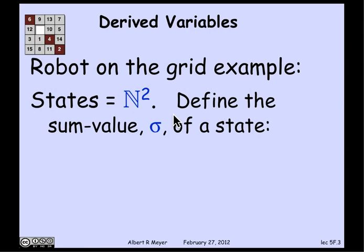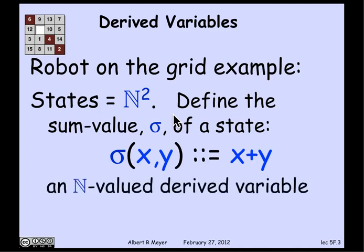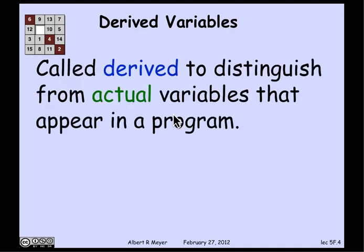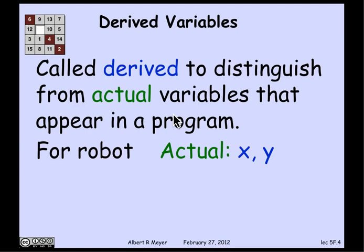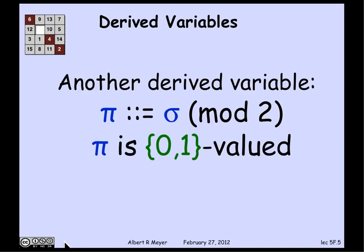In the example of the robot on the grid, the states were pairs of non-negative integers giving the coordinates of where the robot was. One useful derived variable was the sum sigma of a state, defined to be x plus y — a non-negative integer valued derived variable. The word 'derived' comes because we're making it up; it's not part of the specification of the state machine. Another useful derived variable was the parity of sigma — whether the number was even or odd — a 0-or-1 valued variable taking value 0 if the sum is even and 1 if odd.